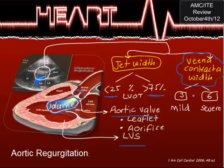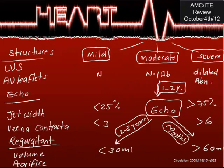The vena contracta indicates velocity through the orifice. Less than 3 is mild, more than 6 is severe. So the echo parameters to know are: aortic valve leaflet and orifice, left ventricular systolic function, jet width, and vena contracta width.